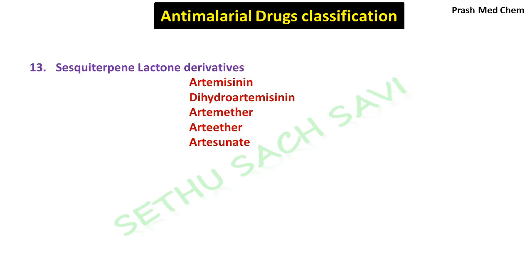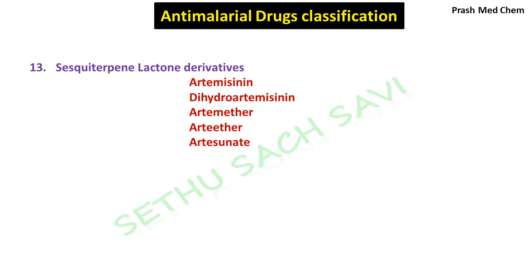Now we will move to the last category in this classification, which is called sesquiterpene-lactone derivatives. The drugs belonging to this category are one of the fastest-acting anti-malarial drugs, derived from a Chinese herb. The drugs are mainly artemisinin and its derivatives such as dihydroartemisinin, artemether, arteether, and artesunate. All of these drugs belong to the sesquiterpene-lactone derivatives.